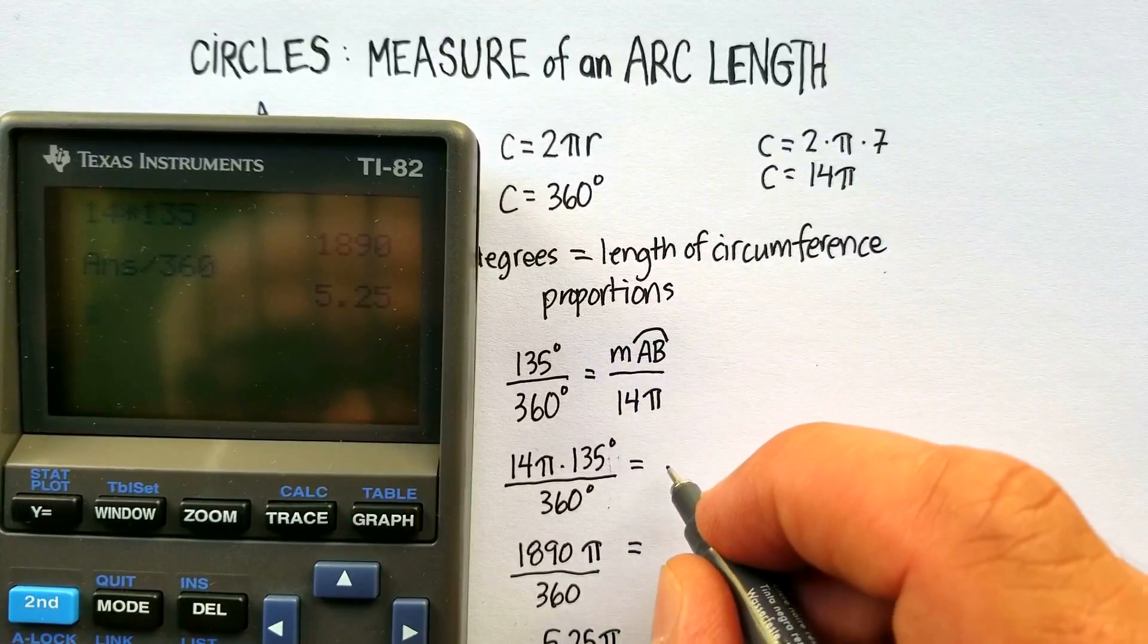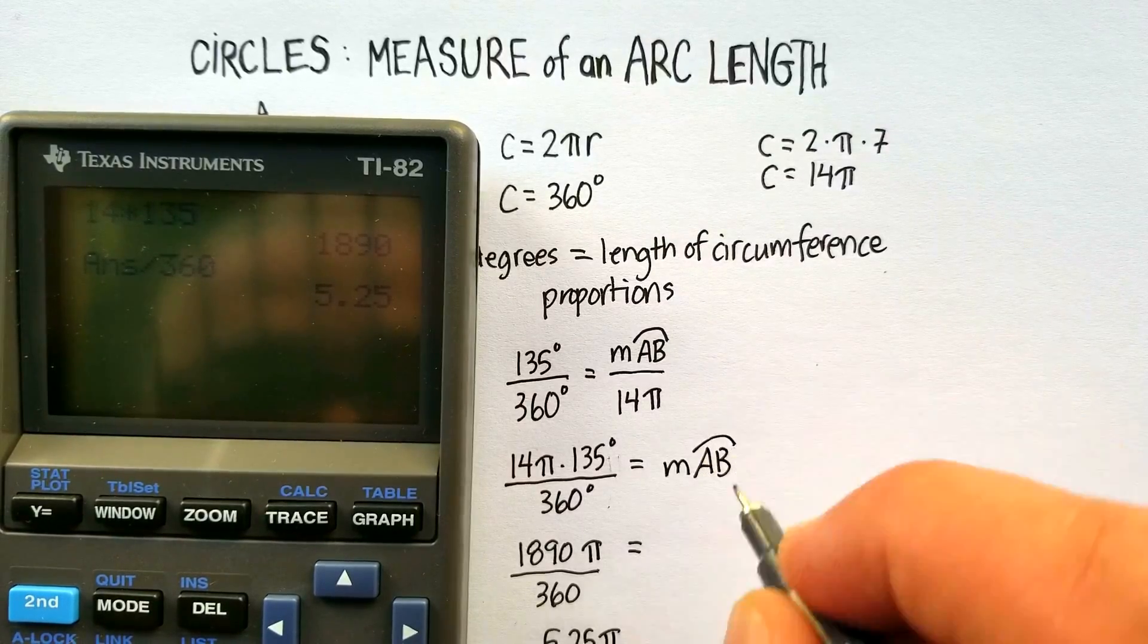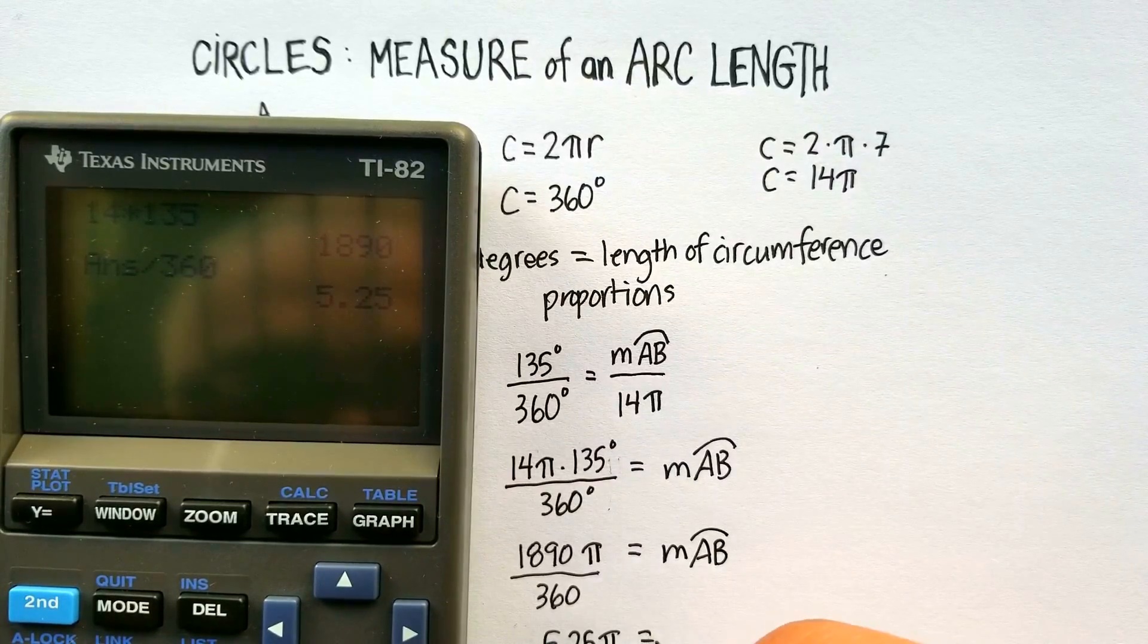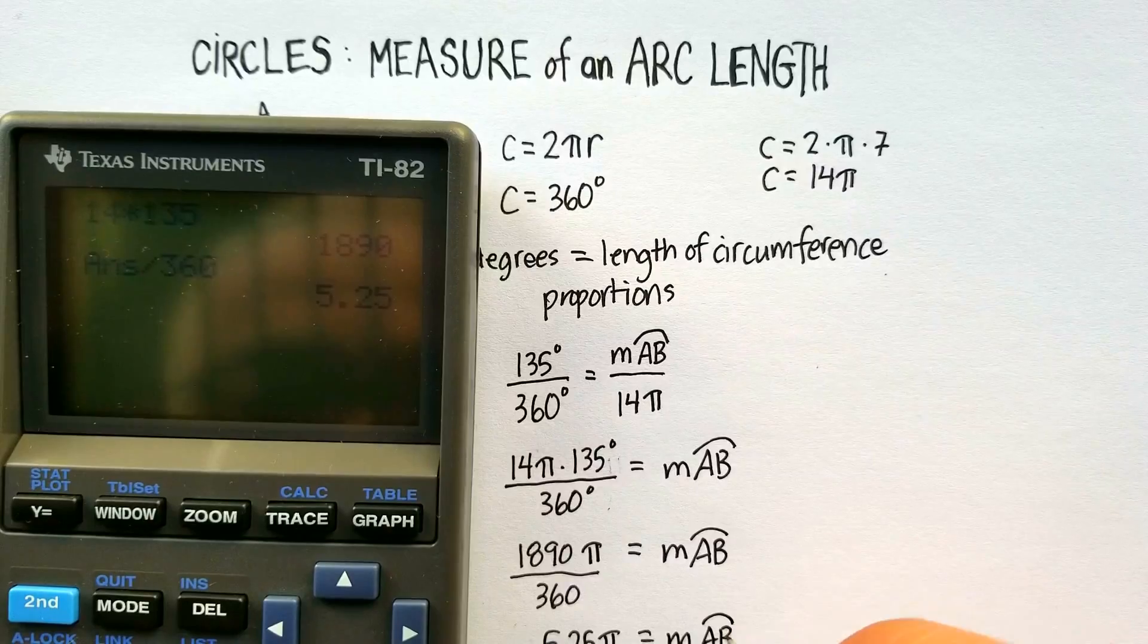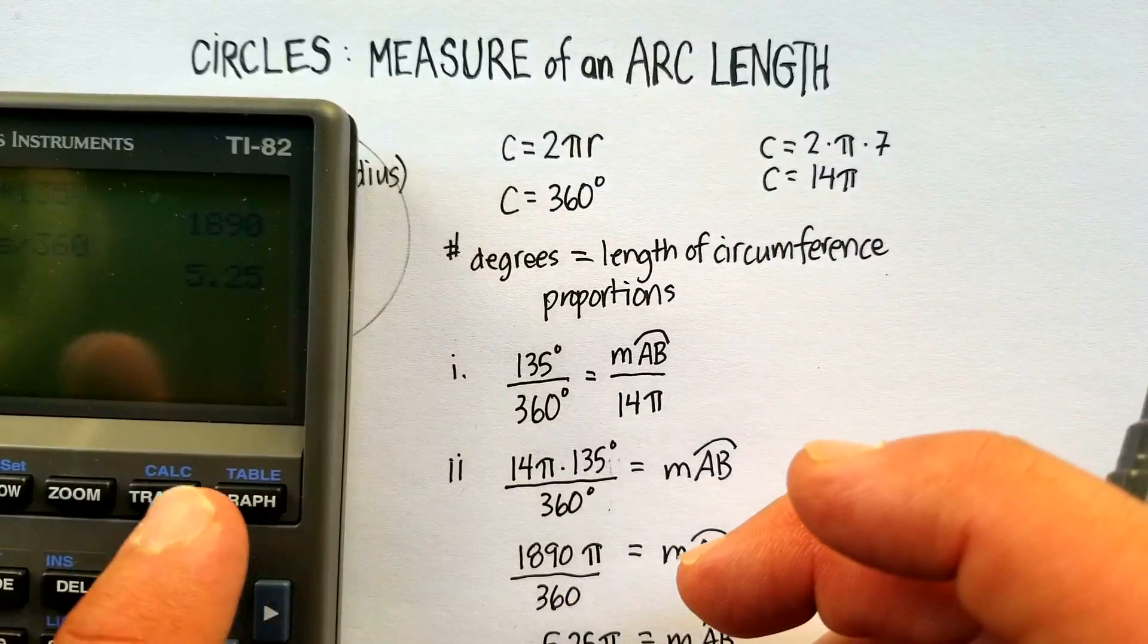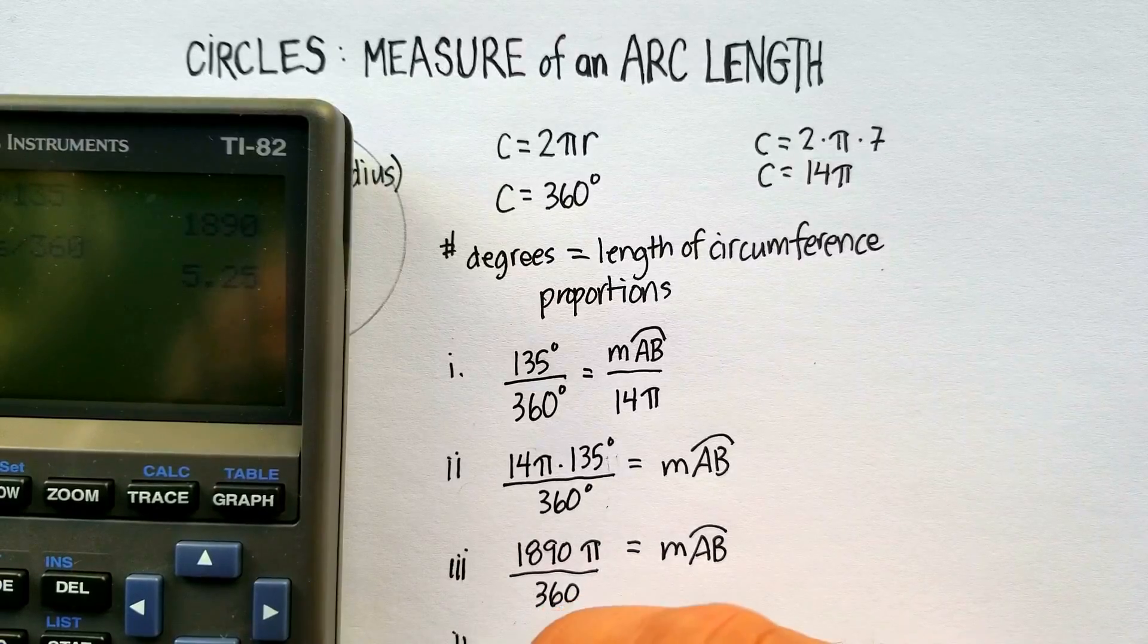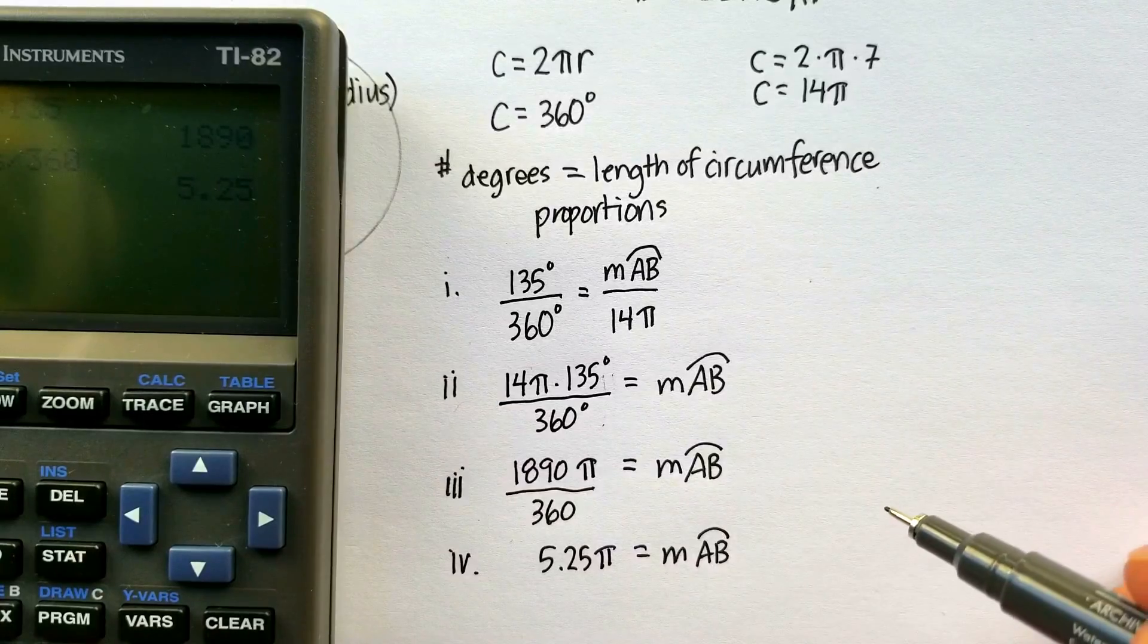And that's going to be the measure of the arc AB. That's my last step. Now again, I'm just going to leave it in terms of pi, but you're welcome to convert pi to 3.14 or 22 over 7.